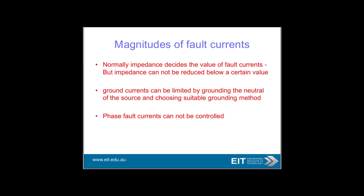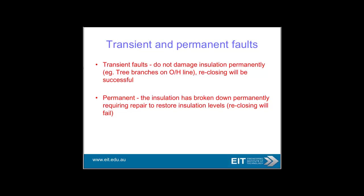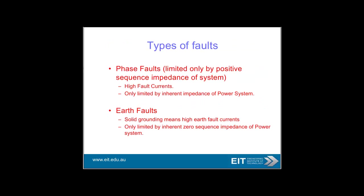Regarding magnitude of fault currents — good old Ohm's law — what restricts the fault current is the impedance. Ground fault currents can be limited by grounding the neutral source and choosing a suitable grounding method. Bear in mind that phase fault currents cannot be controlled. Transient faults don't damage the insulation permanently — for example, a tree branch on an overhead line — and re-closing will be successful. Permanent faults, such as a cable that's broken down permanently, require repairs. If you re-close on that fault before addressing the primary problem, you will get a fault again.